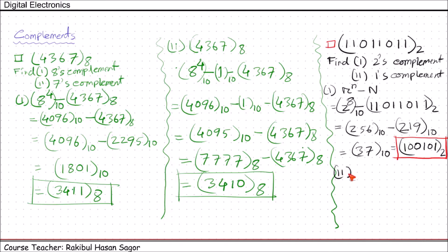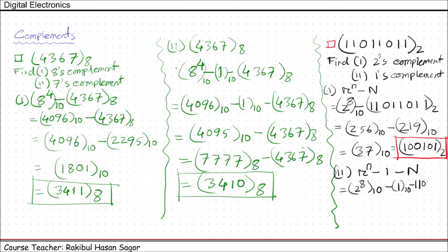Now let's solve for the 1's complement using the equation R to the power n minus 1, minus N: 2 to the power 8, which is 256 in decimal, minus 1, minus the binary number 11011011. Performing this calculation gives the value in binary as 100100. So this is the 1's complement of the binary number.